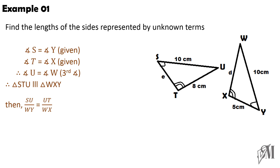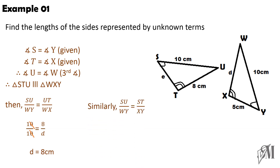When writing down the proportionality, always select the sides carefully. SU is opposite to angle T, and the respective side opposite to angle X is WY, so SU over WY equals UT over WX. Substituting values gives 10 over 10 equals 8 over D; cross multiplying gives D equals 8 centimeters. To find E, we write SU over WY equals ST over XY. Substituting gives 10 over 10 equals E over 5, so E equals 5 centimeters.